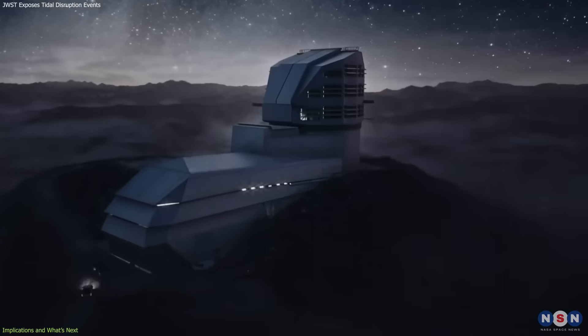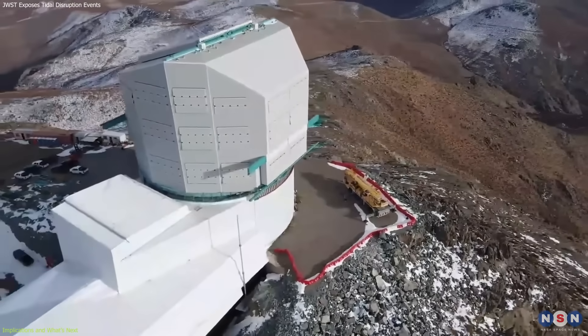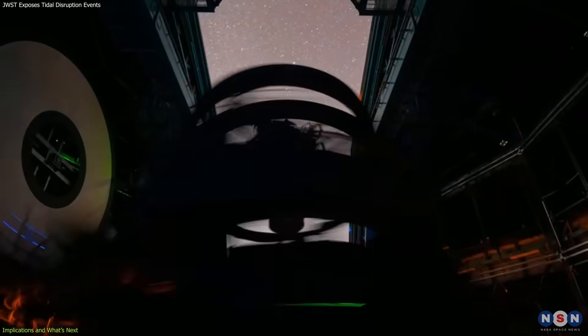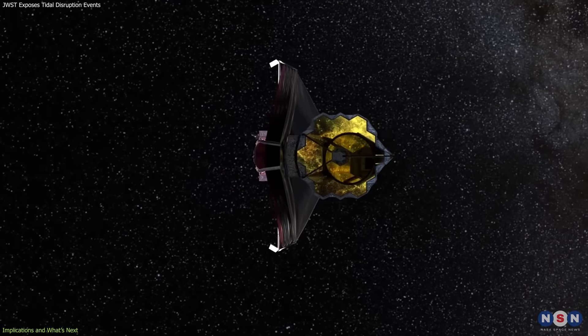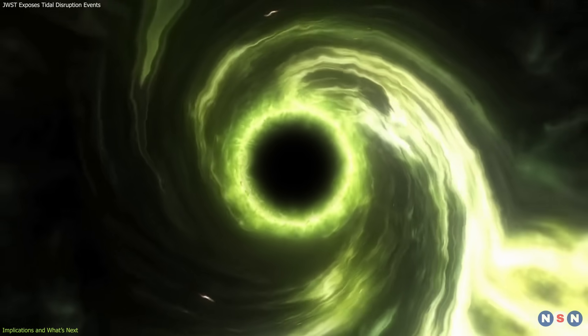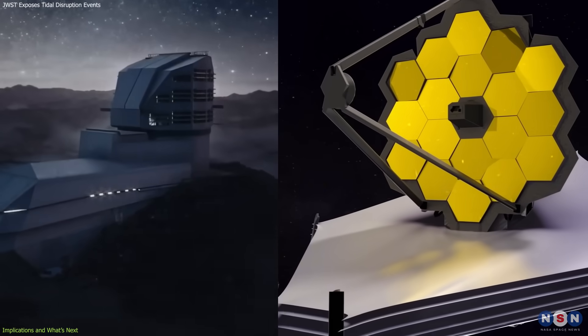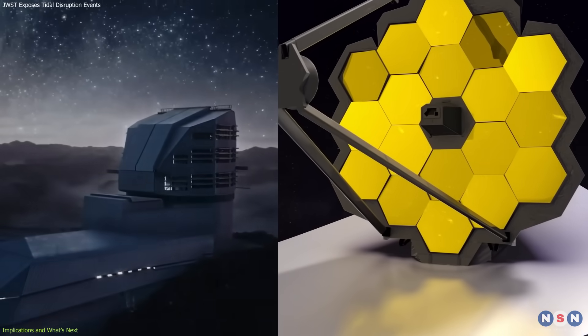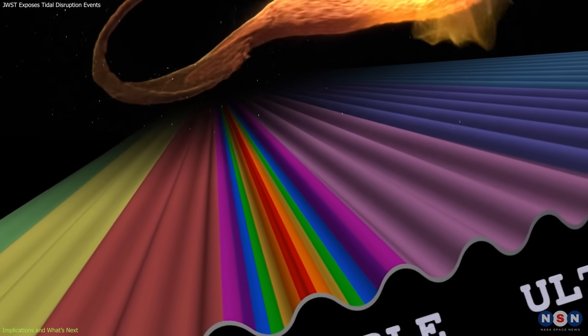Upcoming facilities will make this effort even more powerful. The Vera C. Rubin Observatory, with its wide-field optical surveys, is expected to spot new TDEs soon after they occur. Those discoveries can then be followed up with JWST to probe the obscured environments in detail. Combined, these instruments will provide a multi-wavelength picture that connects optical flashes, X-ray bursts, and infrared echoes.